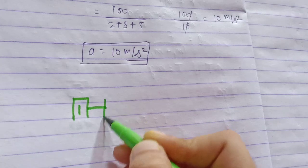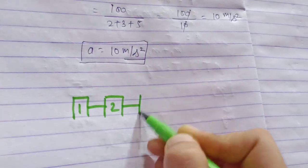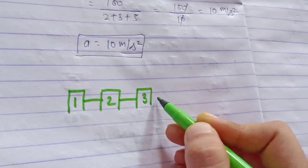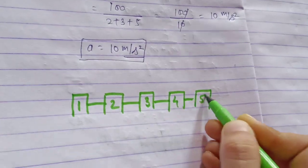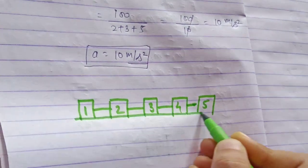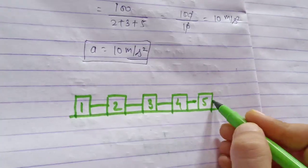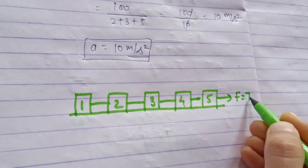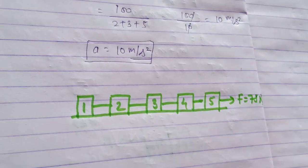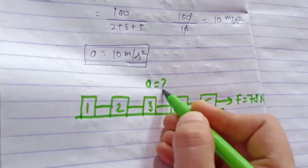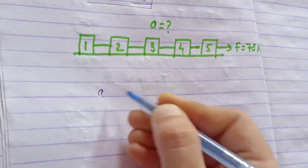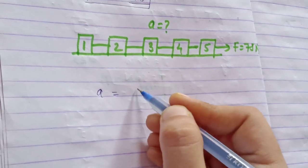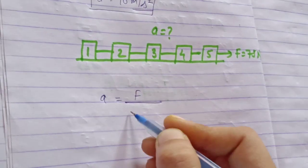One kilogram, two kilograms, three kilograms, four kilograms, and five kilograms. The force is 75 Newtons. What is the acceleration? We will apply our trick: a equals F divided by all mass.